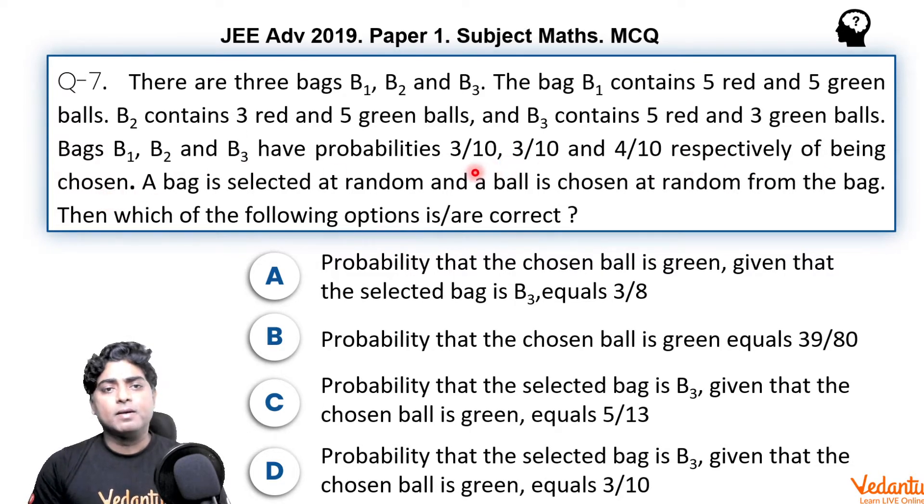So we would choose any one bag at a time. The events of choosing bags B1, B2, B3 are mutually exclusive and exhaustive also. So obviously, the sum of their probabilities must be 1. Here, same is the case. 3 by 10 plus 3 by 10 plus 4 by 10 is 1. Let's see what it says further.